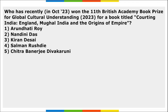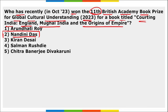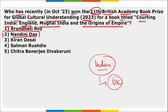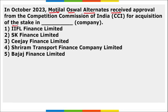Nandini Das, an Indian-born author based in the United Kingdom, won the 11th British Academy Book Prize for Global Cultural Understanding 2023 for her book 'Courting India: England, Mughal India and the Origins of Empire.' Also, Motilal Oswal Alternates received approval from CCI for acquisition of a stake in SK Finance Limited.